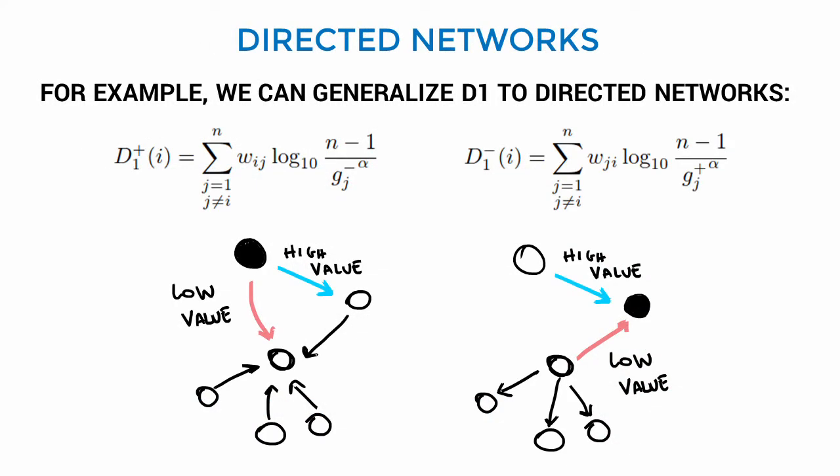So again, we can generalize all the five distinctiveness centrality metrics considering directed networks. I am not bombarding you with formulas you can read in the paper, I just want to show you the generalization of D1.